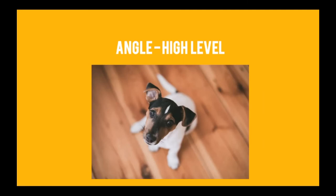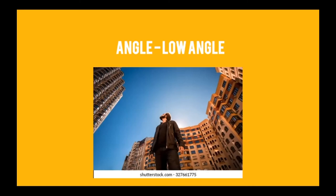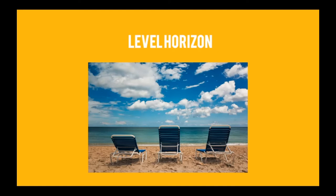Different angles make a big difference when taking pictures. A high angle is when the camera is higher than the subject, like looking down at a puppy. You can take pictures of the same thing from 50 different angles and see a huge difference — angles can make you look taller, slimmer, or different. Eye-level angle is how we normally shoot, and a low angle gives another completely different look.